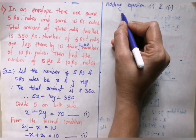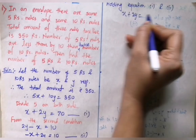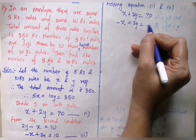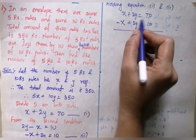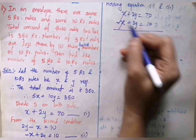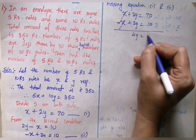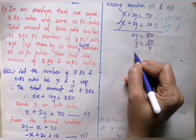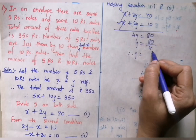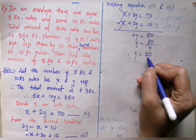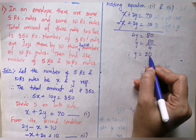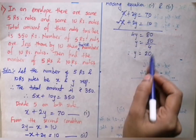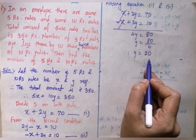Equation 1 is x plus 2y equals 70, and equation 2 is minus x plus 2y equals 10. Adding both equations, x and minus x cancel out. We get 4y equals 80. Therefore y equals 80 divided by 4, which gives y equals 20. So the number of ₹10 notes is 20.